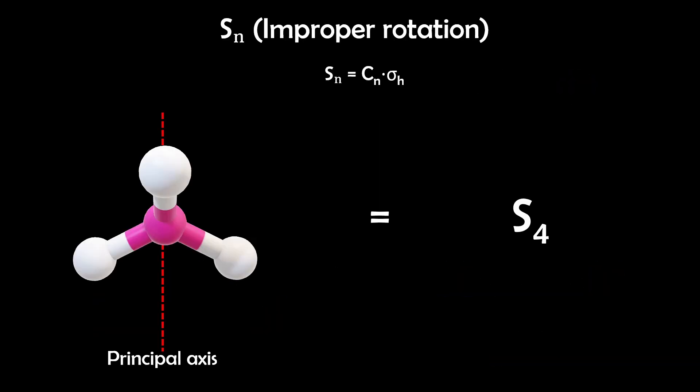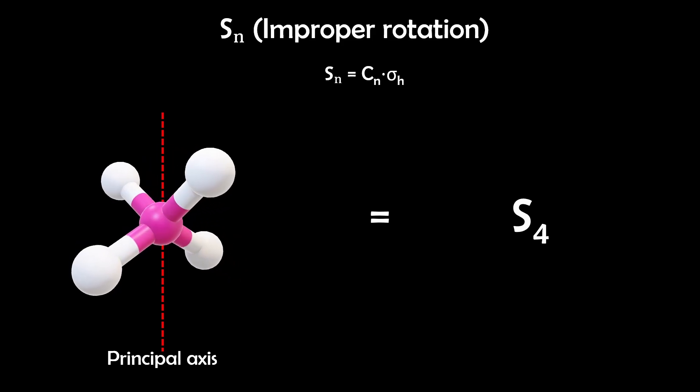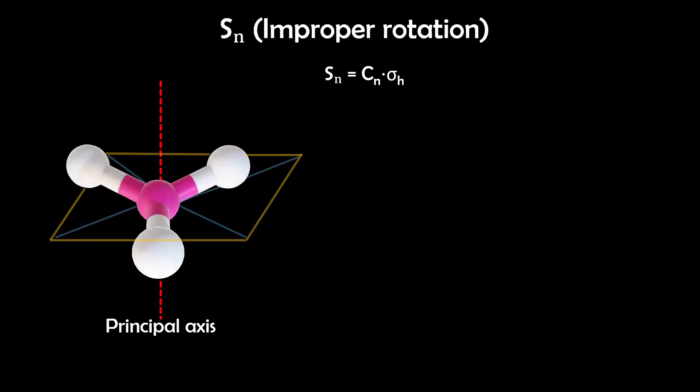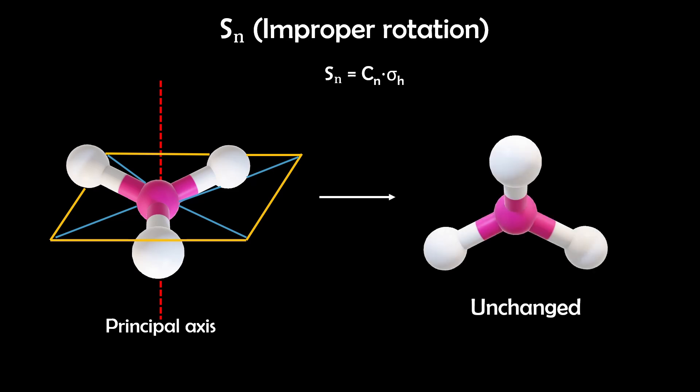Improper rotation. Methane has S4 symmetry. For this, you rotate the molecule 90 degrees and then reflect it through a plane that is perpendicular to the rotation axis. After doing both steps, the hydrogens have swapped around, but the molecule looks unchanged.